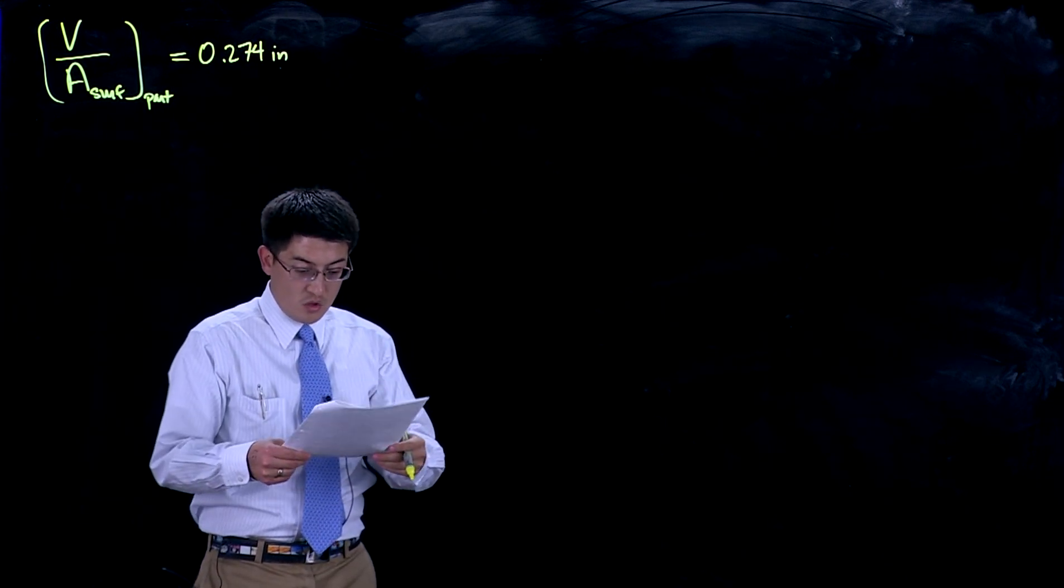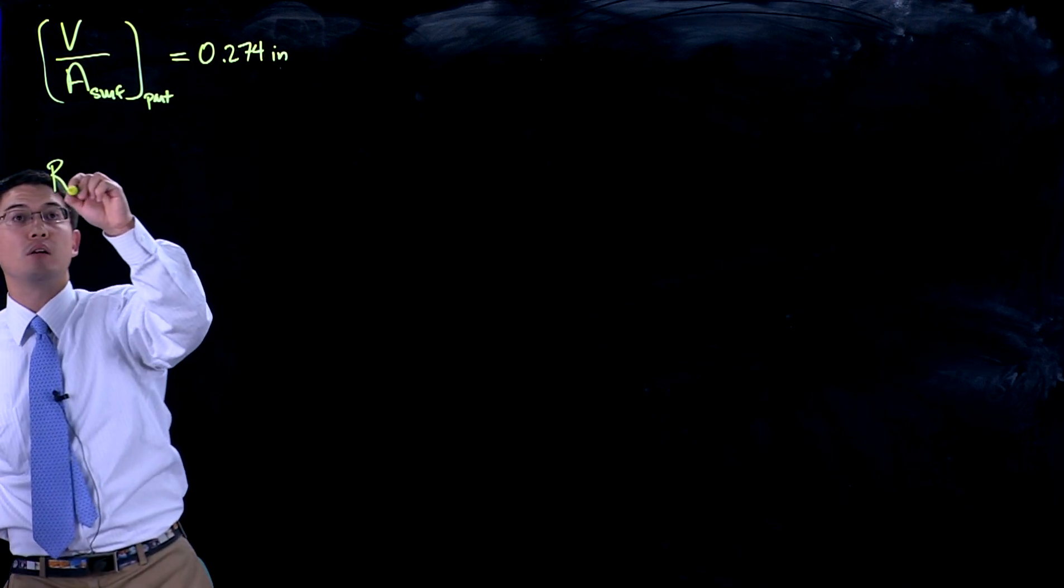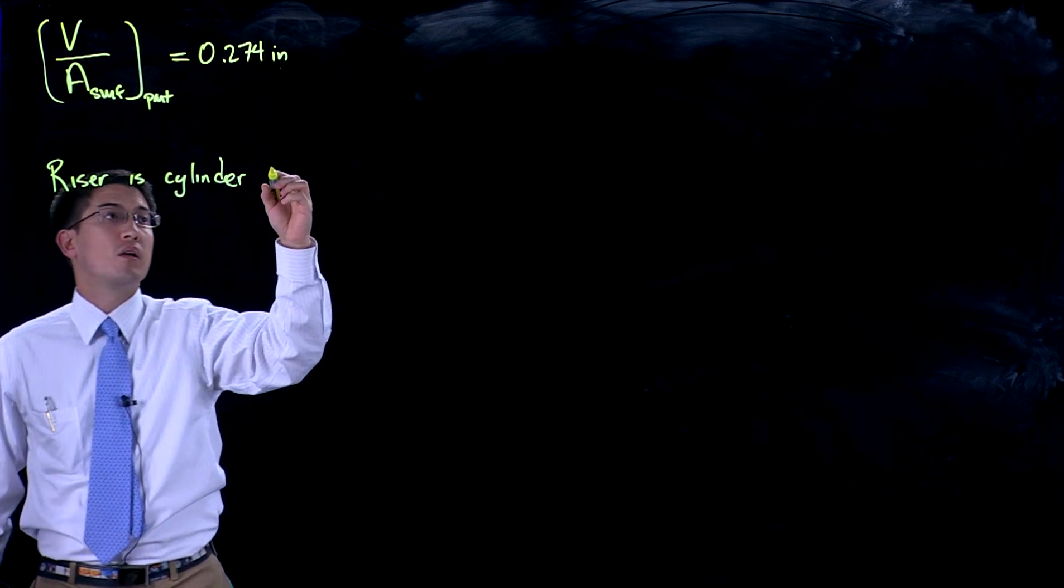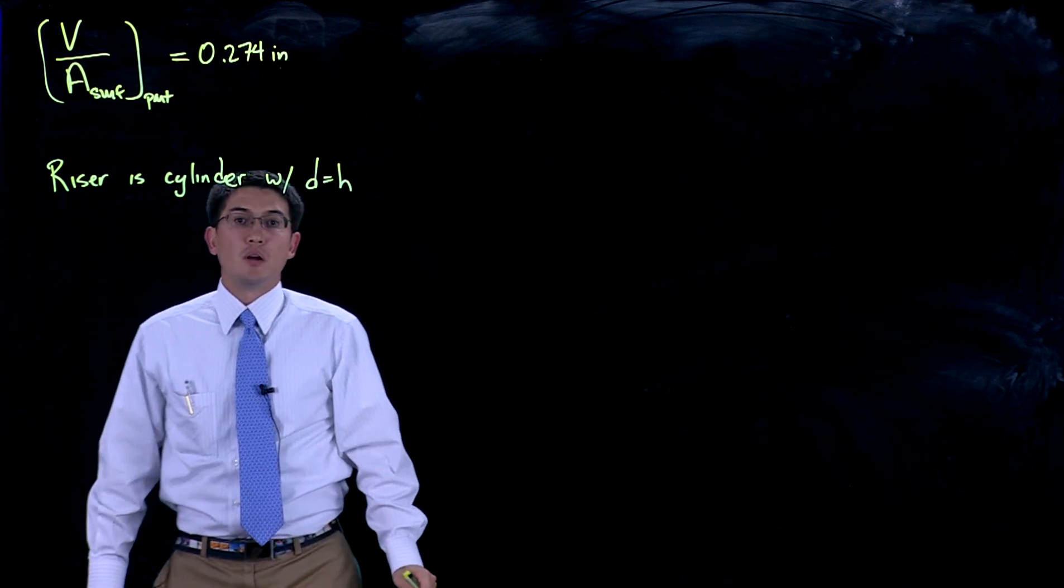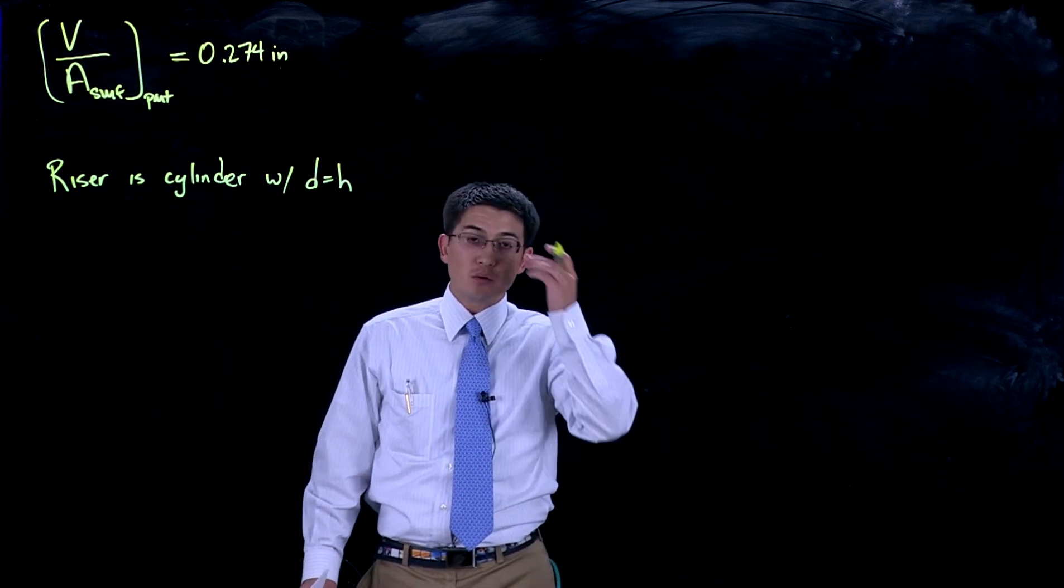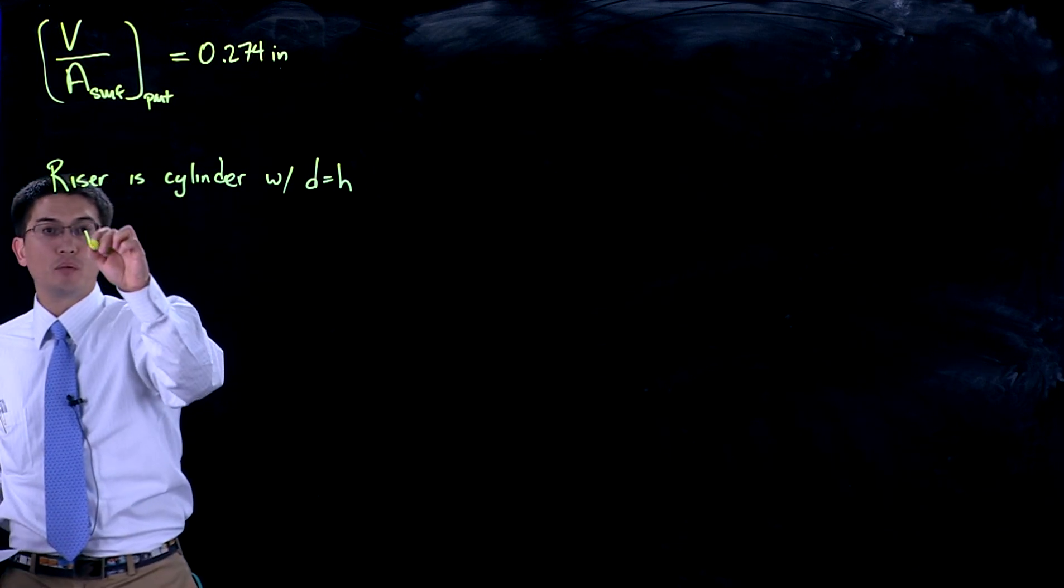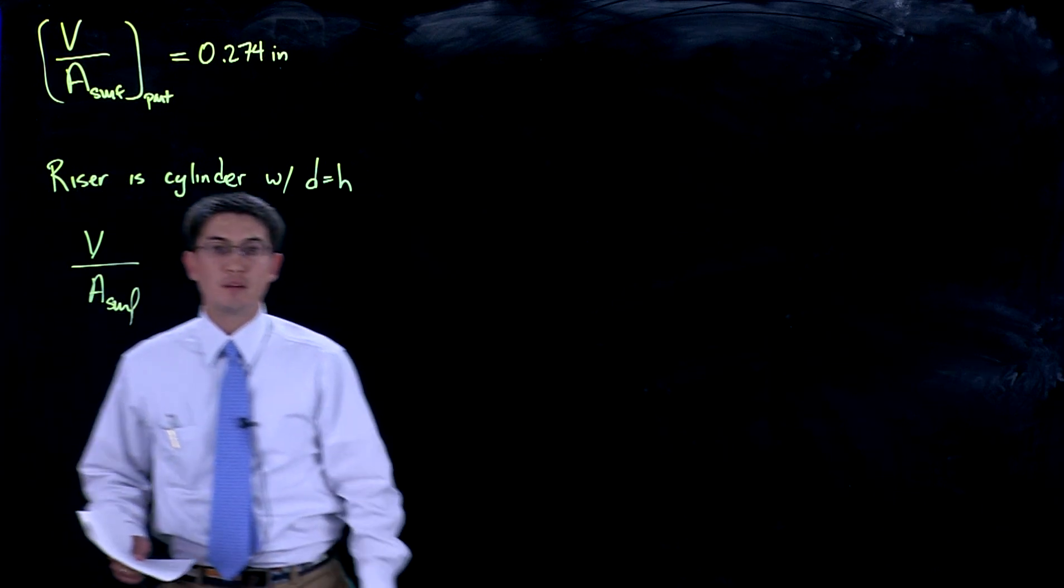We know that the cylinder for the riser has a diameter equal to its height. We know that we want the volume over the surface area for the riser.